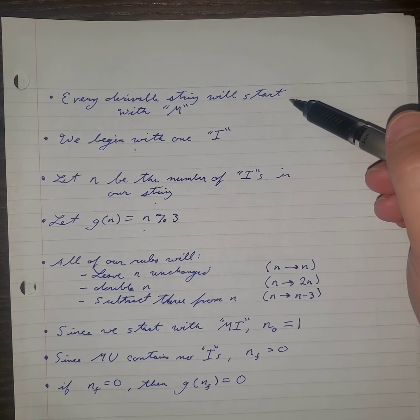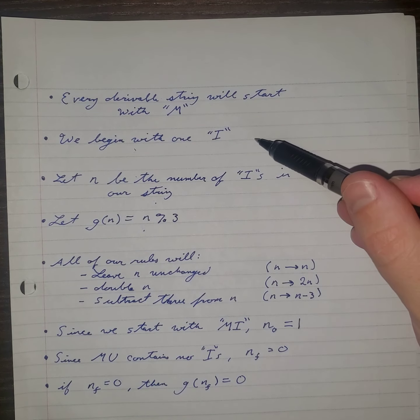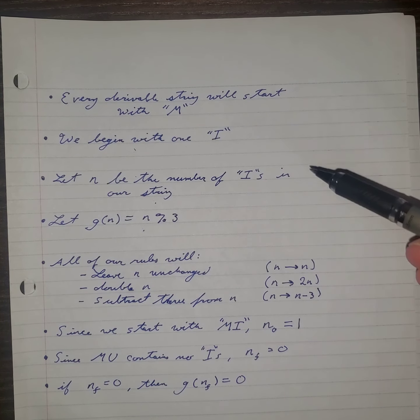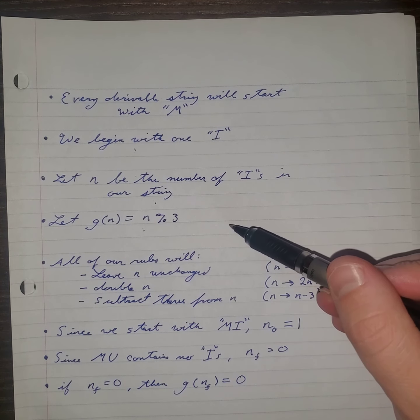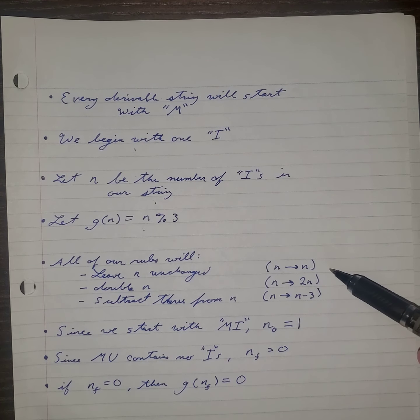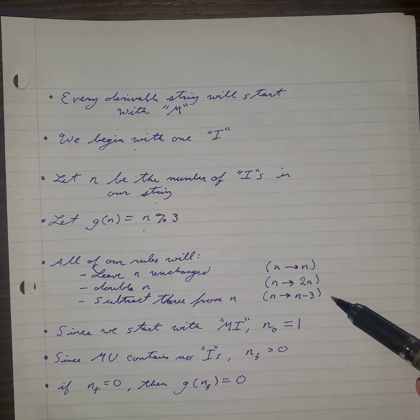Note, every derivable string will start with M. Hofstadter even gives us this in the book. We begin with one I. Let N be the number of I's in our string, and let G of N equal N mod 3. All of our rules will either leave N unchanged, multiply N by 2, or subtract 3 from N.